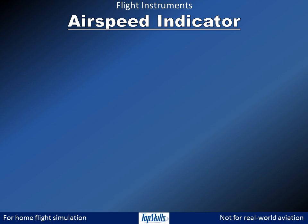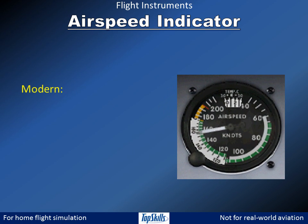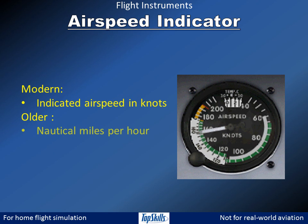Most modern airspeed indicators show indicated airspeed in knots. Older instruments show airspeed in nautical miles per hour. A few airspeed indicators show kilometers per hour. The type of speed they report is shown on the instruments.